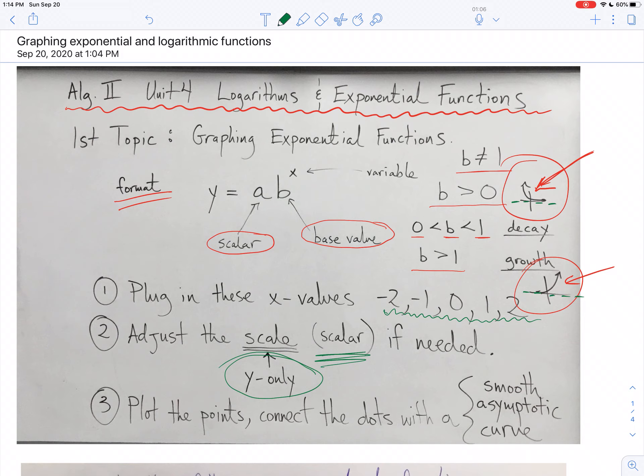And if you're going to use your graphing calculator to practice and check your answers, remember, you're going to go to the window to make those changes. And also, when you're done checking your work, you might want to zoom standard to reset your window. Eventually you're going to get some points that you can plot, and you always connect the dots with a smooth asymptotic curve.